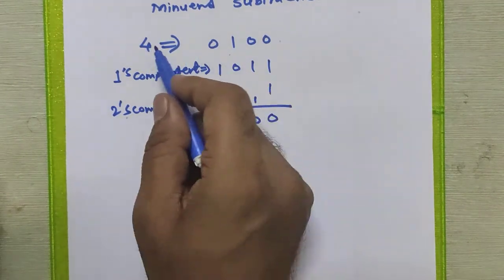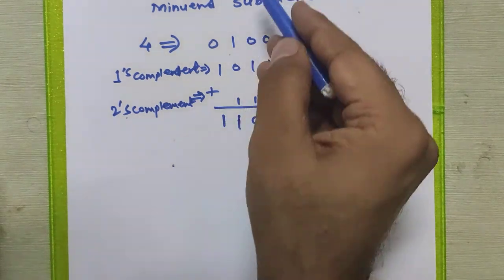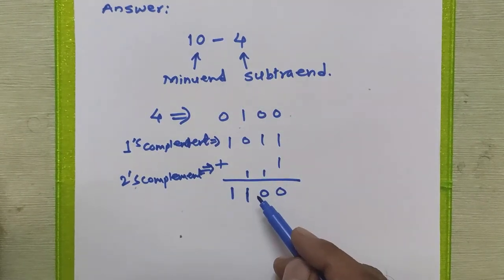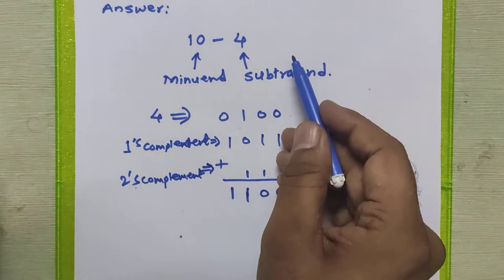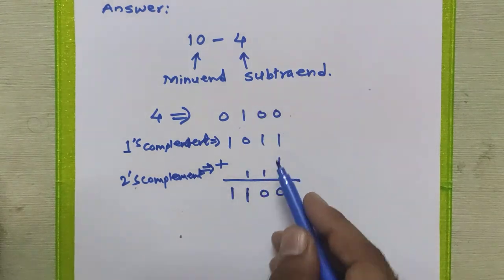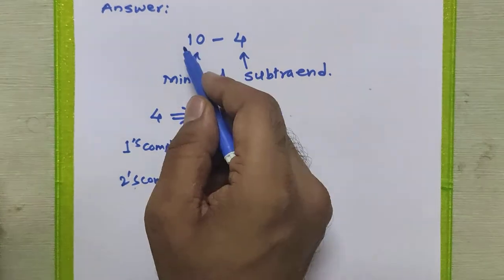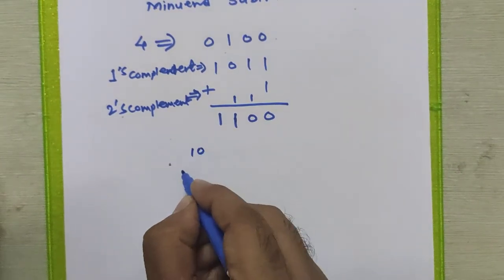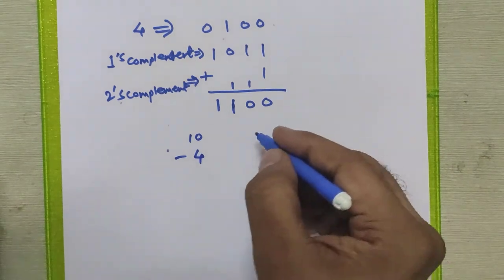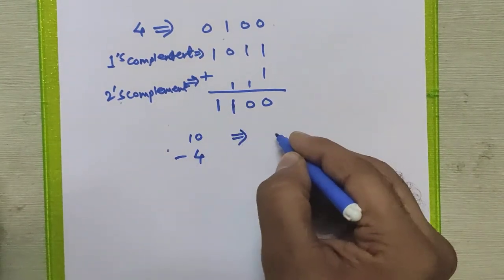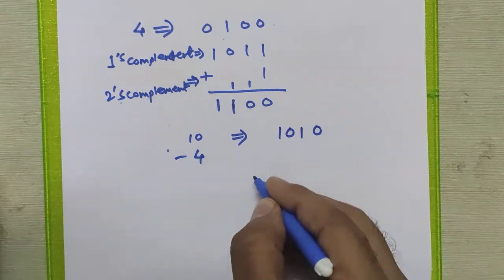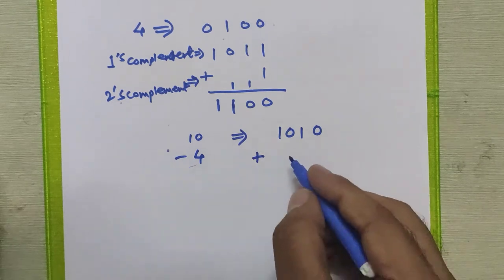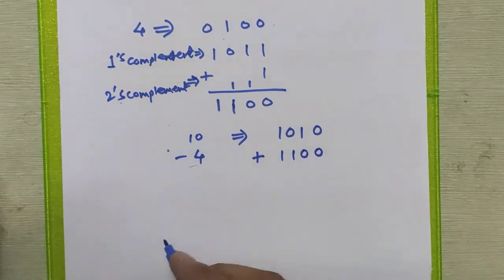This is the two's complement of four in binary. Now, to perform this subtraction, we just have to add the two's complement of the subtrahend to the minuend. Ten in binary is 1 0 1 0, and we will add the two's complement of the subtrahend, which is 1 1 0 0, to the minuend.